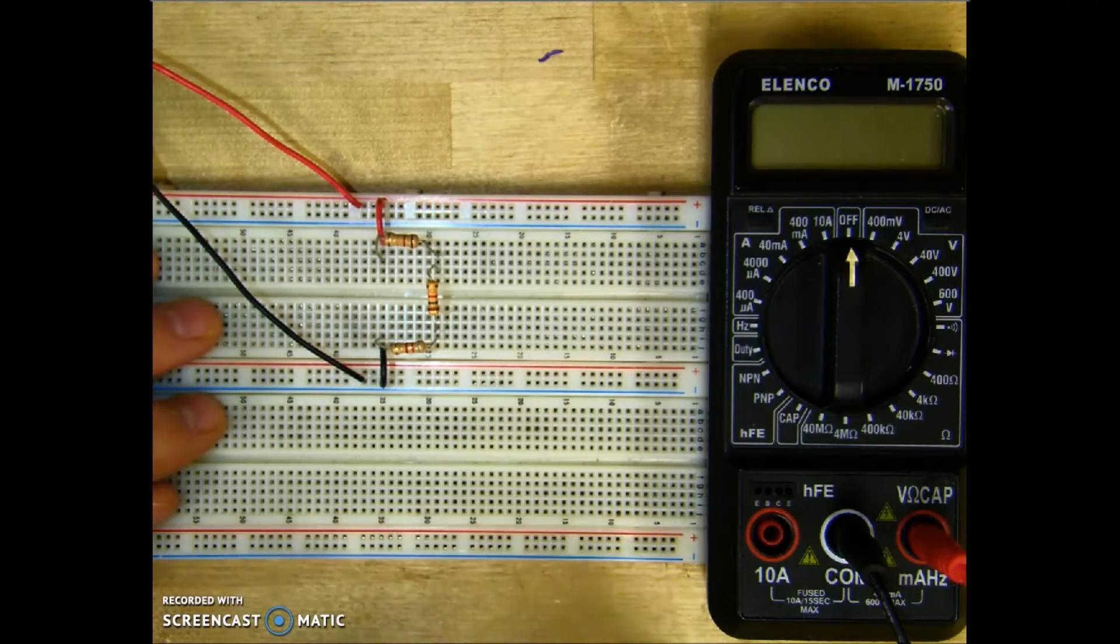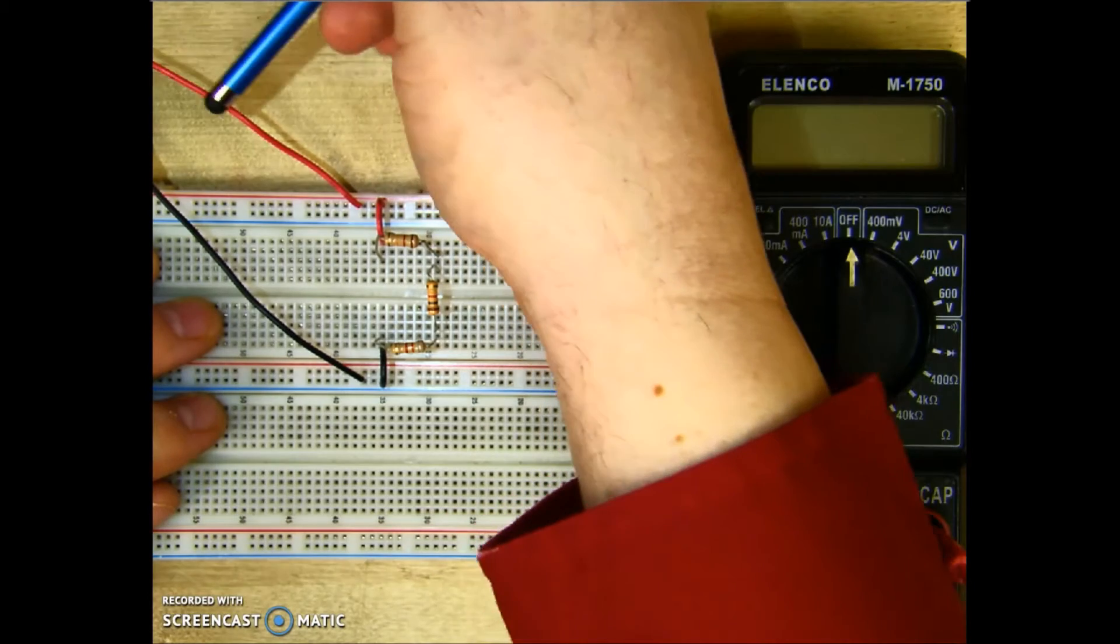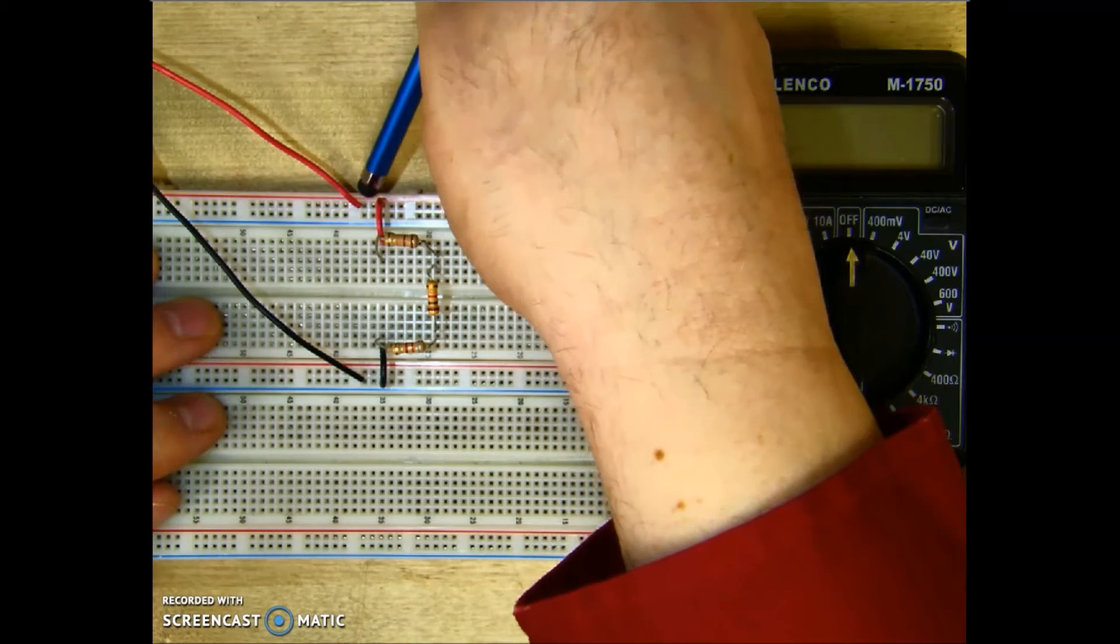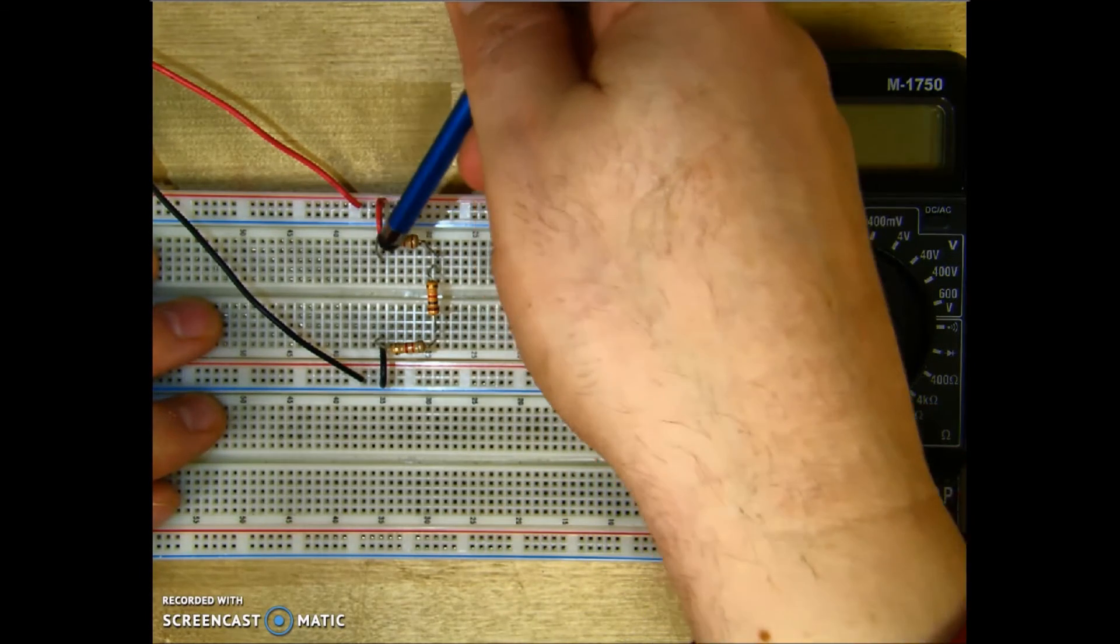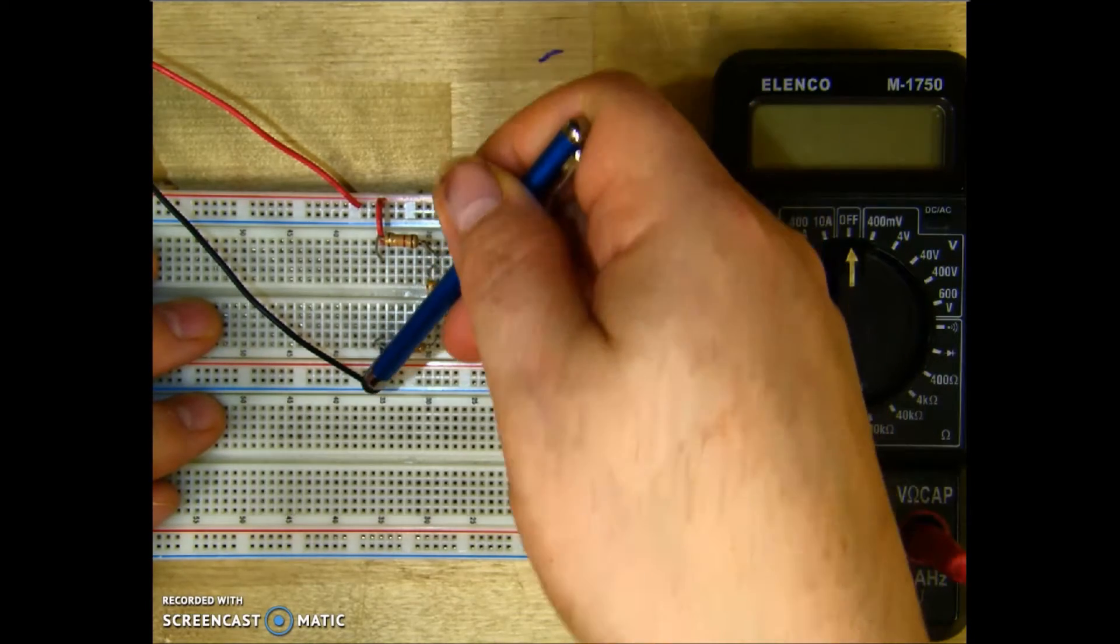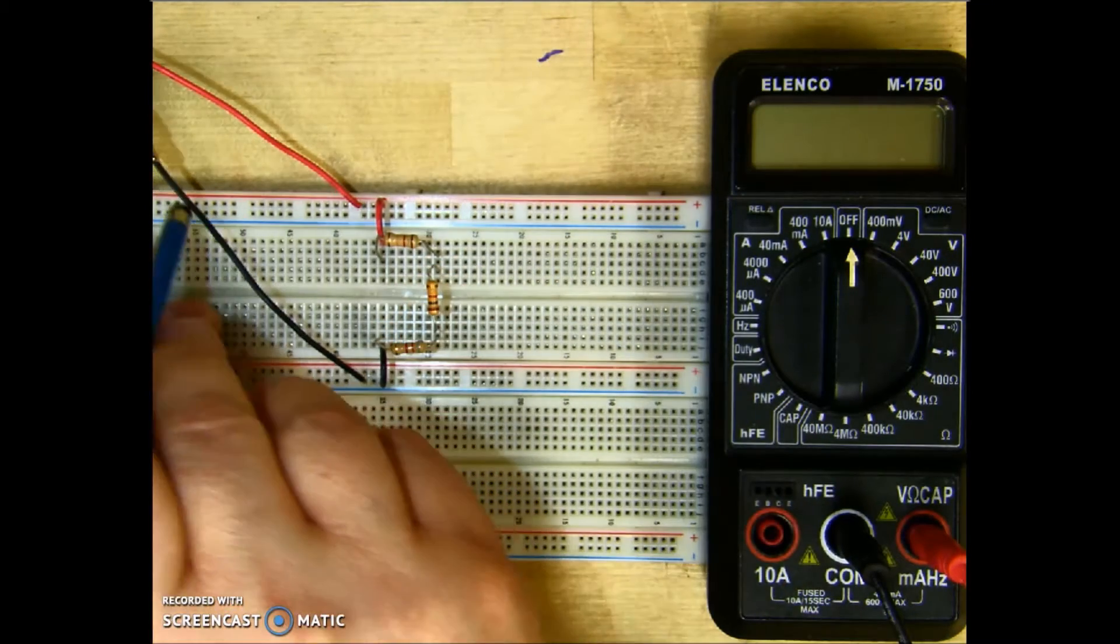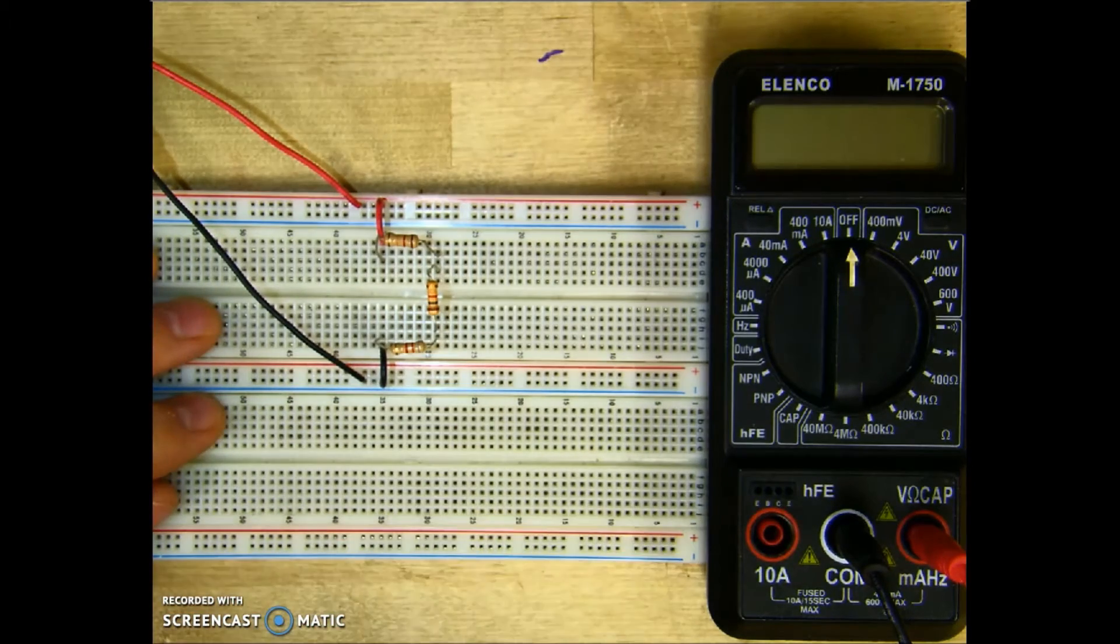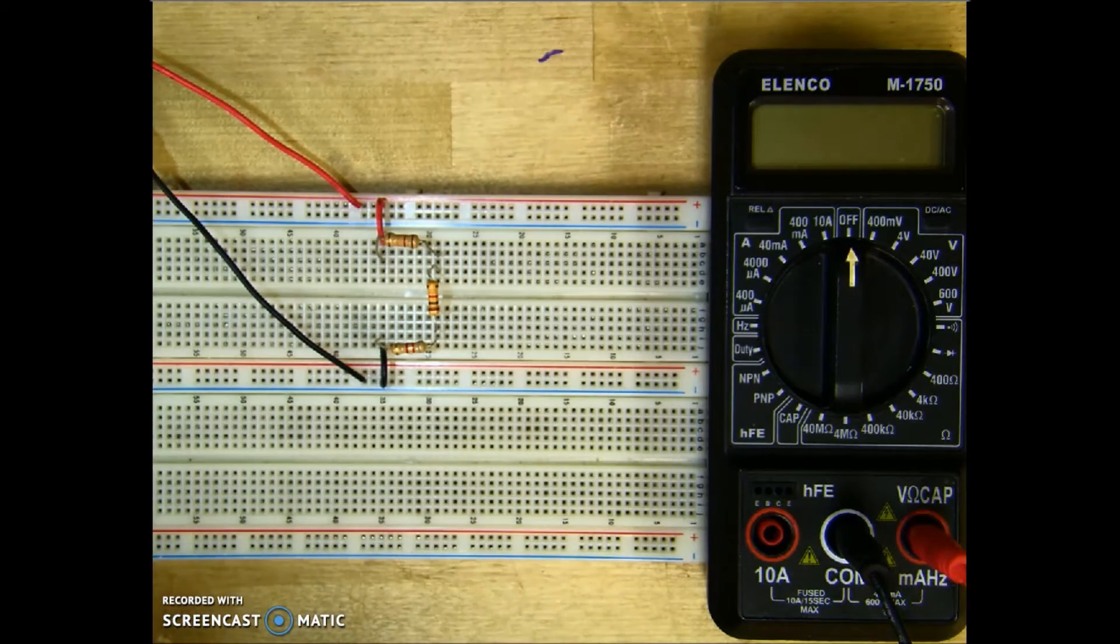I have here a simple series resistor circuit. The power comes in from the positive of the source, through the jumper, through R1, through R2, through R3, through the jumper, and back through the source. There is only one path for current to flow, so it is a series circuit.